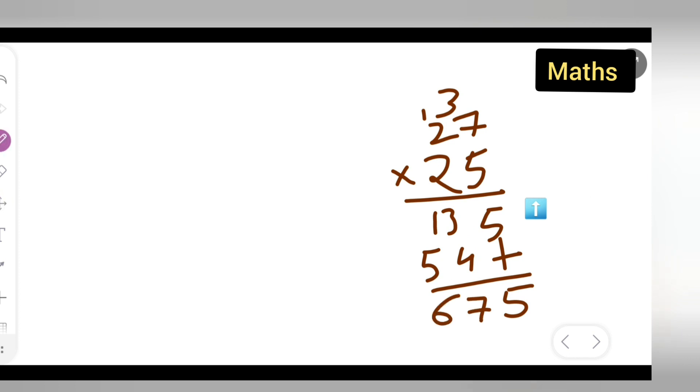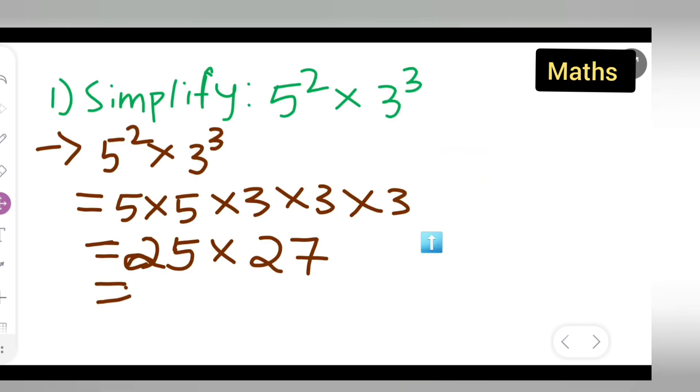This will be 6. So 675. The answer will be 675. Here you have to write down 675. After simplifying 5 square multiplied by 3 cube, you got 675.